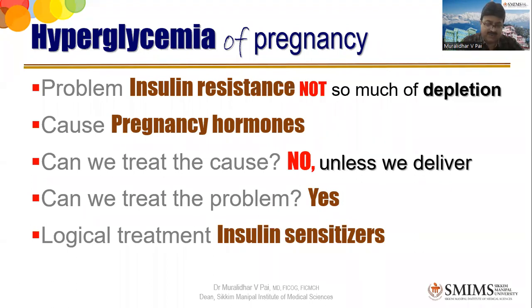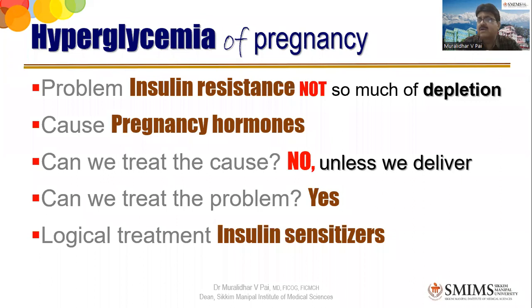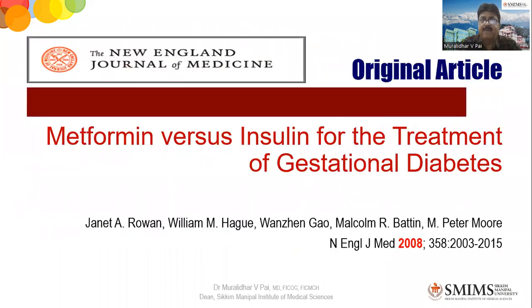Can we treat the problem before delivery? Yes, of course. The logical treatment has to be an insulin sensitizer. When I was an undergraduate, we were taught that insulin sensitizers — mostly oral hypoglycemic agents — are contraindicated, and much was stressed about their teratogenicity. They also said the long-acting nature of OADs was a problem that couldn't be adjusted properly, whereas insulin could be adjusted readily. For a long time, oral hypoglycemic agents were considered a no-no.